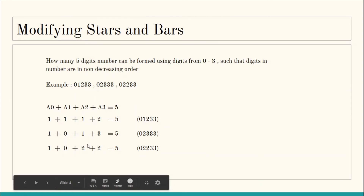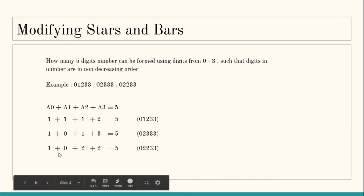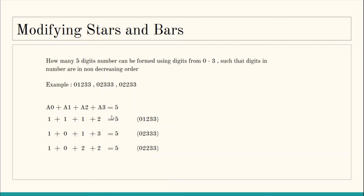Since the frequency of 1 is zero, we skip it. Then we fill two twos, and then we fill two threes. What is happening is that we always fill the i-th digit before any digit greater than it, so the number is guaranteed to be in non-decreasing order. That is why the total number of solutions of this equation equals the total number of valid numbers for this question.